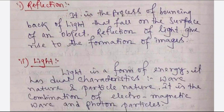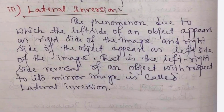What is light? Light is a form of energy. It has dual characteristics — one is wave nature and another is particle nature. It is a combination of electromagnetic waves and photon particles. Next is lateral inversion — a very important topic. Lateral inversion is the phenomenon due to which the left side of an object appears as the right side of the image and the right side appears as the left side. This left-right reversal with respect to a mirror image is called lateral inversion, as seen every day when looking in a plane mirror.